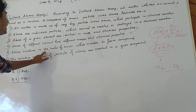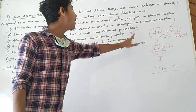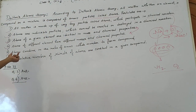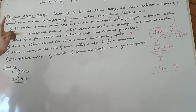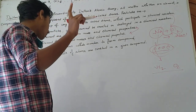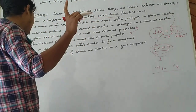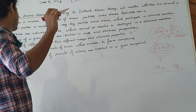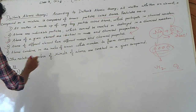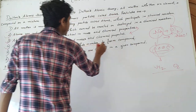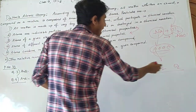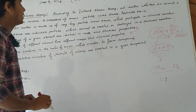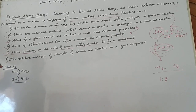Postulate number 5 states: atoms combine in the ratio of small whole numbers to form a compound. This postulate indicates our second law — the law of constant proportion — which states that elements are always present in definite proportions in a chemical substance. For example, hydrogen and oxygen always combine in the ratio 1 to 8.